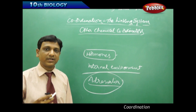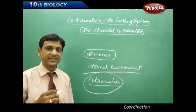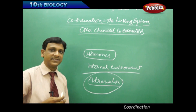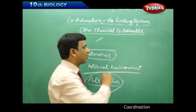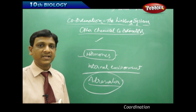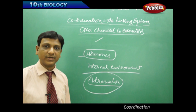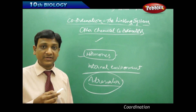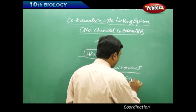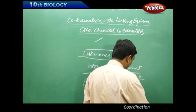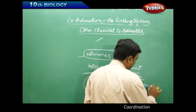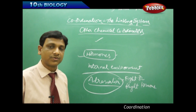The nervous system controls and coordinates our voluntary and involuntary functions, but in certain cases its control and coordination is limited. The other part of responsibility is taken by these chemical coordinators called hormones. So hormones are responsible for bringing certain kinds of changes in our body. Adrenaline is one example that helps to face such situations. Adrenaline is called the fight-or-flight hormone.